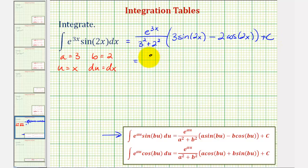So we have e to the 3x, divided by this would be 9 plus 4, 13, times 3 sine 2x, minus 2 cosine 2x, plus c.